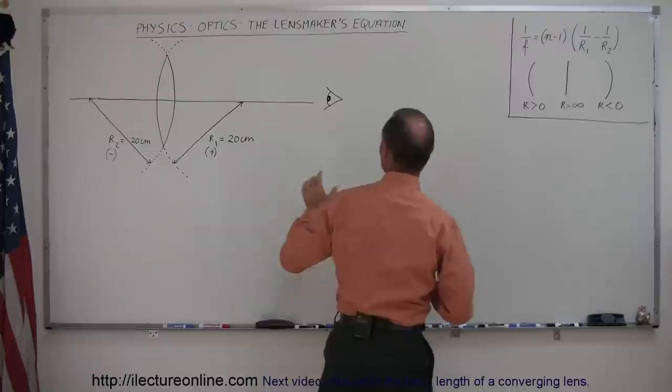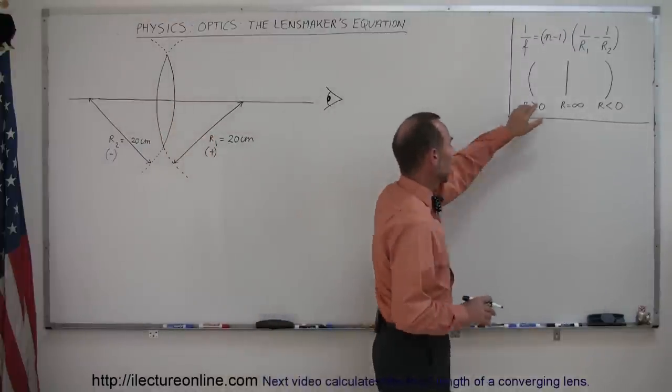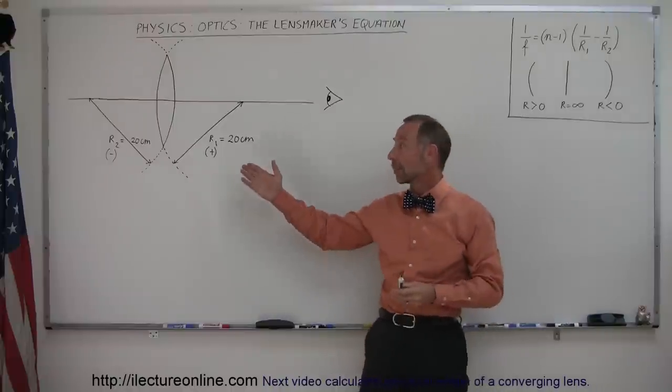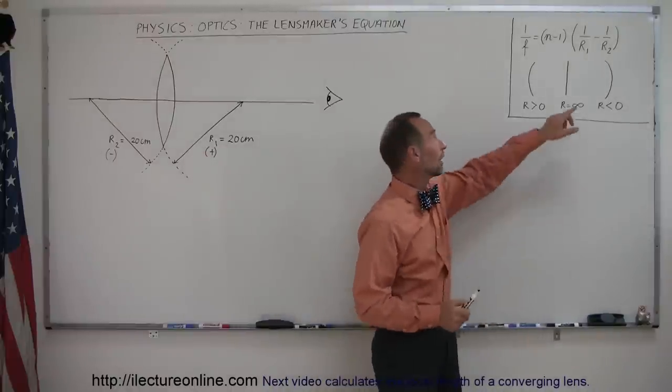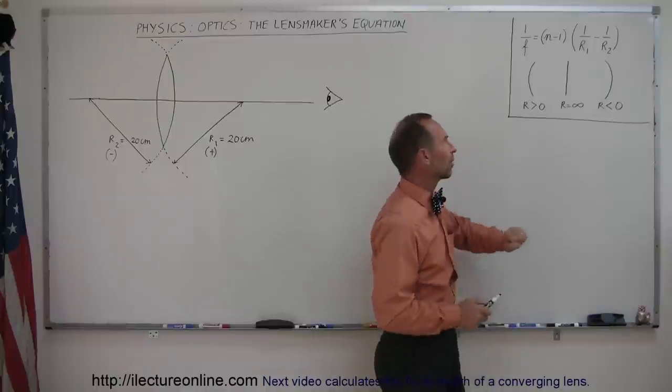Minus 1 because we assume that the lens is in a medium called air and of course the index of refraction of air is 1. Now if we place the lens for example in water then of course this would not be 1. That would be the index of refraction of the medium. And we'll do an example of that later.